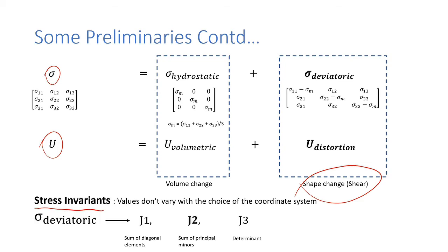For deviatoric stress tensor, we have J1, J2, and J3 as invariants. J1 represents the sum of the diagonal elements of the matrix. J2 represents the sum of principal minors. And J3 represents the determinant of the sigma deviatoric matrix. Of all, J2 will be of interest to us. I know that was quick, but I believe this would be sufficient to get the main idea of von Mises stress.